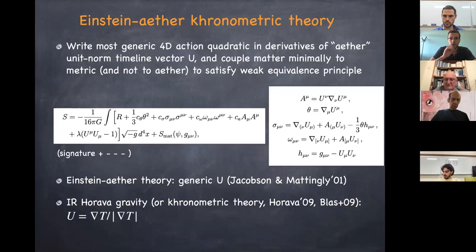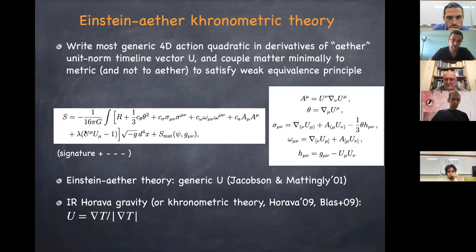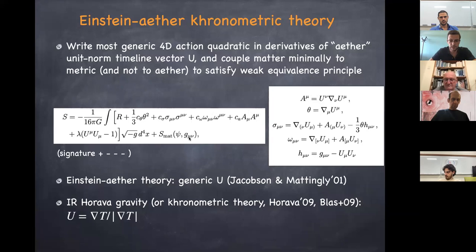Entering into more detail: if I want to break boost symmetry in four dimensions by introducing a preferred spacetime threading — a preferred time direction at each point — I introduce a unit-norm vector field called the aether, which is forced to be timelike by a Lagrange multiplier. I can then add all possible terms quadratic in derivatives of the aether: the square of the expansion, the shear, the vorticity, and the acceleration. This is what is known as Einstein-Aether theory, first introduced by Jacobson and Mattingly about 20 years ago.